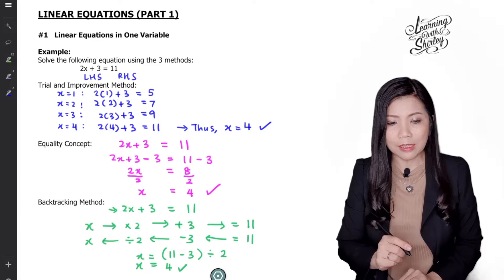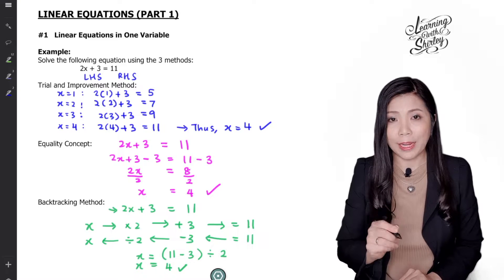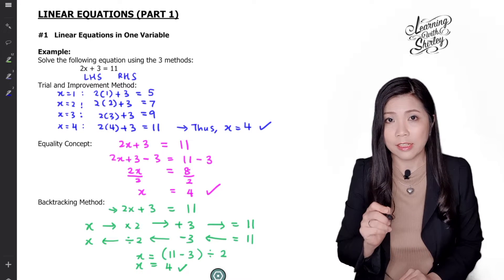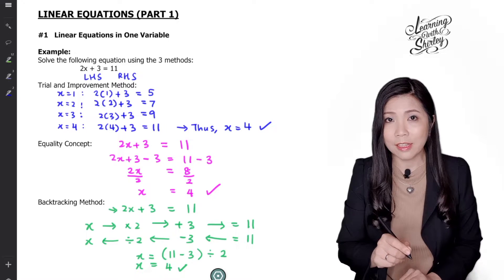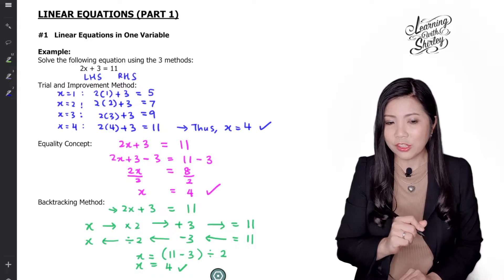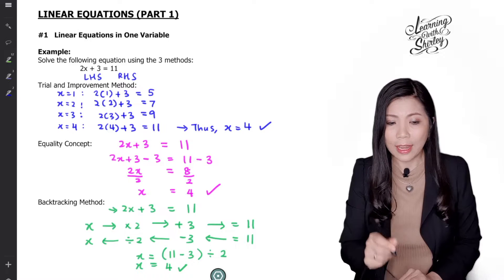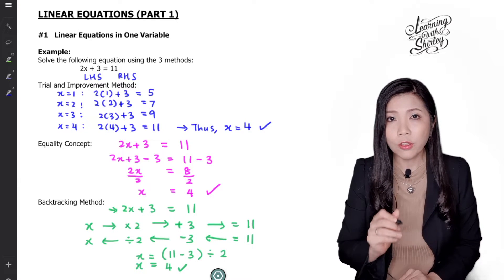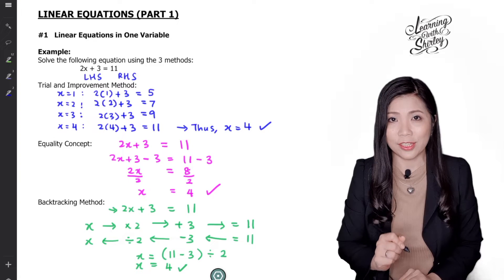Among these three methods, the best method is the backtracking method, because it is the shortest, simplest, and fastest way to get the answer. So if they don't mention any specific method to use, it's better for you to use the backtracking method for all questions involving linear equations.